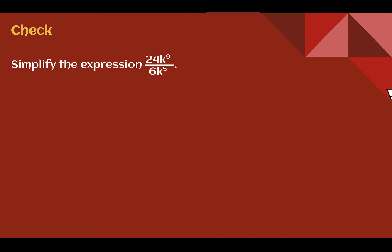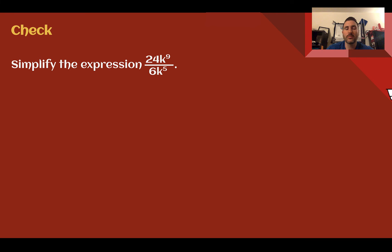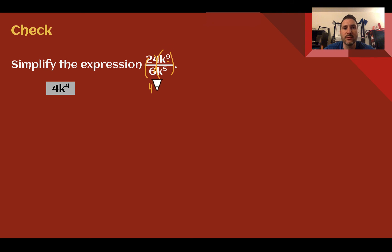Check your understanding: simplify the given expression. Pause the video now and complete the check. You should have got 4k to the 4th power. So 24 divided by 6 is 4. k to the 9th divided by k to the 5th — subtract their exponents, 9 minus 5 gives 4. Base of k. So 4k to the 4th.